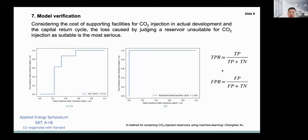Considering the cost of supporting facilities for carbon dioxide injection in actual development and the capital return cycle, the loss caused by judging a reservoir that is not suitable for CO2 injection as suitable is the most serious. From the results chart on the previous page, there is only one prediction result for this type of situation. The three models output a probability value during the training process, and the final judgment result is obtained after comparing with the threshold. So the impact of the threshold is greater. The purpose of screening is to select as many reservoirs as possible that can be successfully injected, and at the same time reduce the probability of misjudging unsuitable reservoirs as suitable. This actually means increasing the true positive rate and reducing the false positive rate.